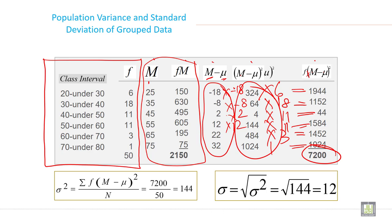So your standard deviation will be 7200 divided by n is 50. So when you solve this, 144. This is your variance. And if you want to calculate a standard deviation, so just put this value under root. So under root 144 is 12. This is your standard deviation. 144 is variance and 12 is your standard deviation.